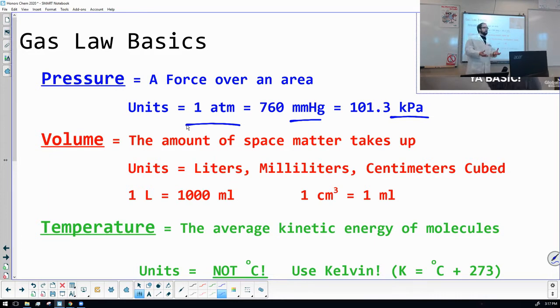One atmosphere, remember, is about Earth's atmosphere, like what you should be experiencing right now, unless you're on top of a mountain or deep down in the bottom of a cave. And that is equal to 760 millimeters of mercury. And that's equal to 101.3. It's like one foot equals 12 inches. Same length, different units. When we talk about volume, remember, we're talking about how much space something takes up. Here we're talking about things like liters, milliliters, and centimeters cubed. A reminder that we have one liter will always be 1,000 milliliters. And one centimeter cube will equal one milliliter.